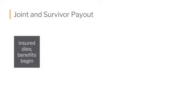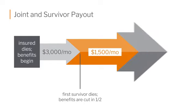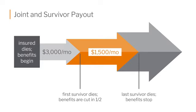Sometimes you might have more than one beneficiary, so you could have a joint and survivor payout on a life insurance policy. The insured passes away and the benefits pay out. Say there are two people listed — the total benefit is $3,000, split between the two, so they're each getting $1,500. If one of those survivors then passes away, the remaining survivor does not get to take the full $3,000 — they still just receive their $1,500, their half of the payout, until they pass away.